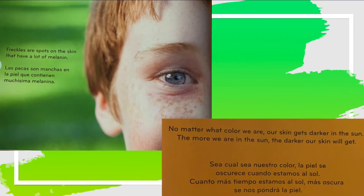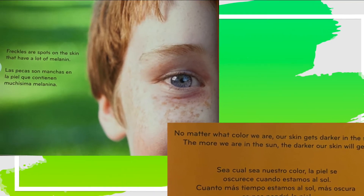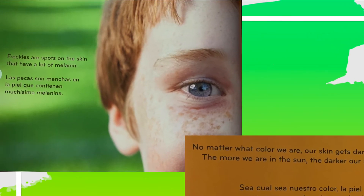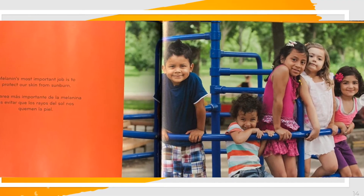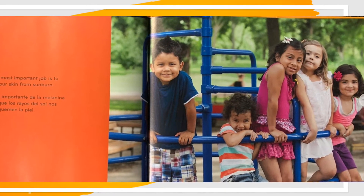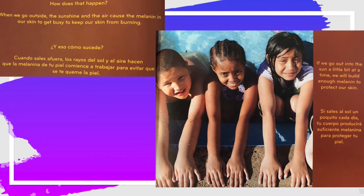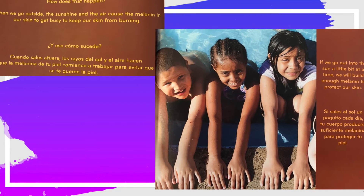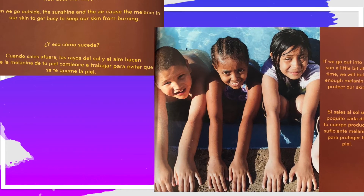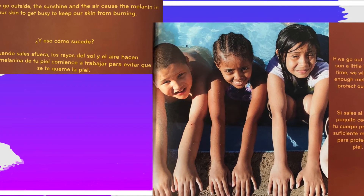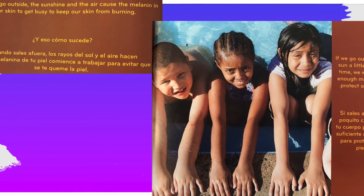Freckles are spots on the skin that have a lot of melanin. No matter what color we are, our skin gets darker in the sun. The more we are in the sun, the darker our skin will get. Melanin's most important job is to protect our skin from sunburn. When we go outside, the sunshine and the air cause the melanin in our skin to get busy and keep our skin from burning. If we go out into the sun a little bit at a time, we will build enough melanin to protect our skin.